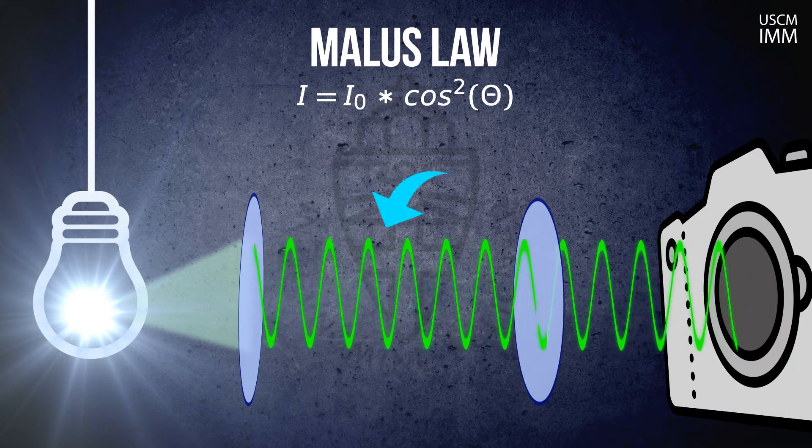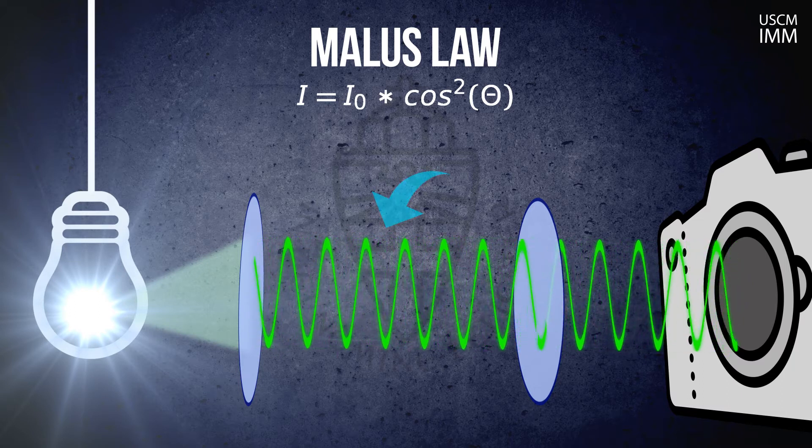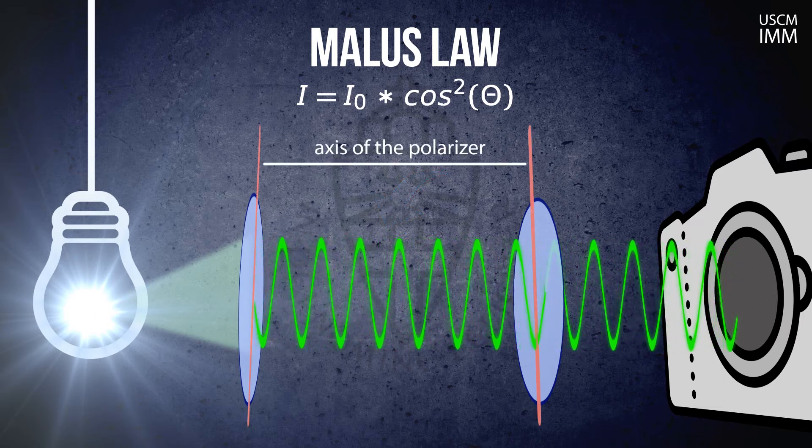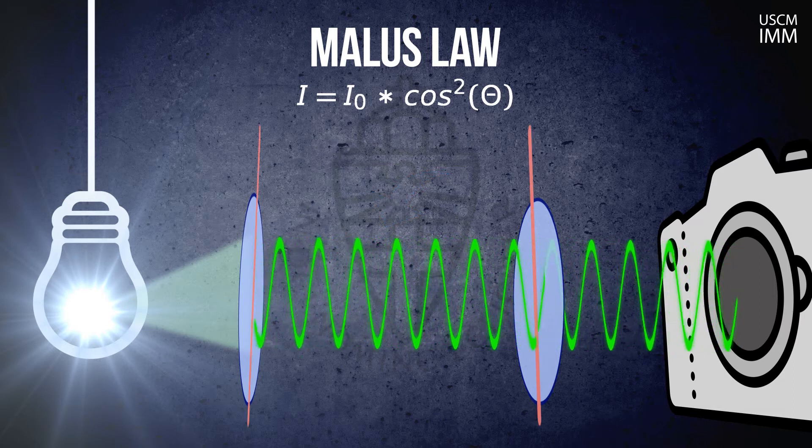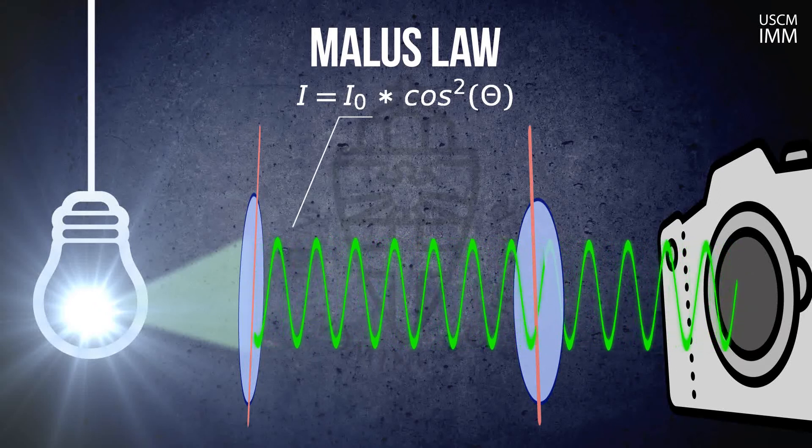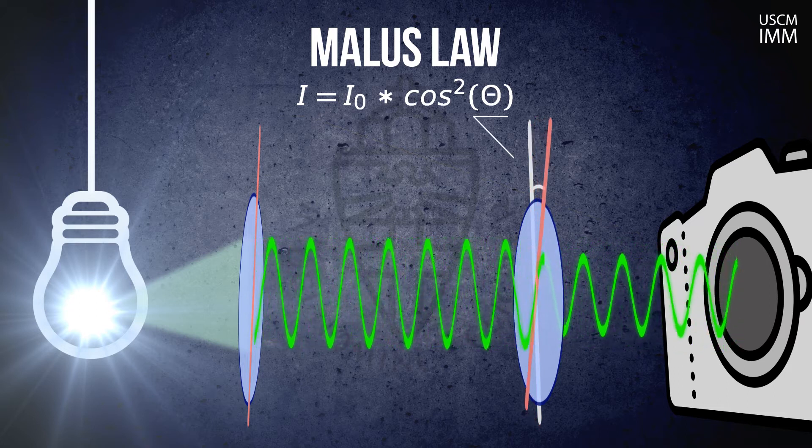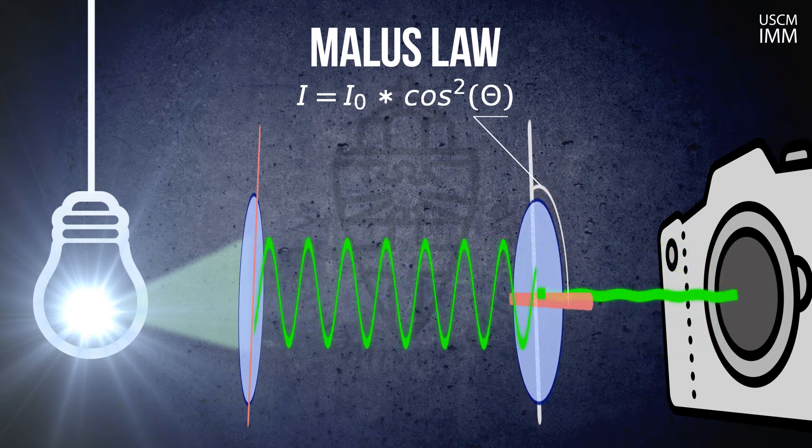After passing through the first polarizer, light from the source will become linearly polarized along a specific direction called the axis of the polarizer. If the intensity of the polarized light after the first polarizer is I₀, the intensity of light after the second polarizer will depend on the angle between the axis of the first and the second polarizer.